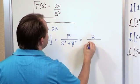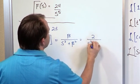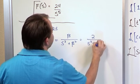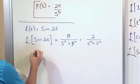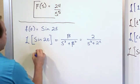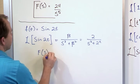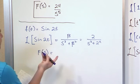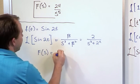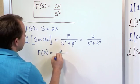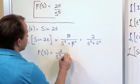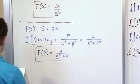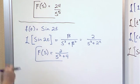So it's going to be 2 over s squared plus 2 squared. To write the full answer, capital F as a function of s — meaning you've already transformed it — is 2 over s squared plus 4. And that's what you would circle on your exam.